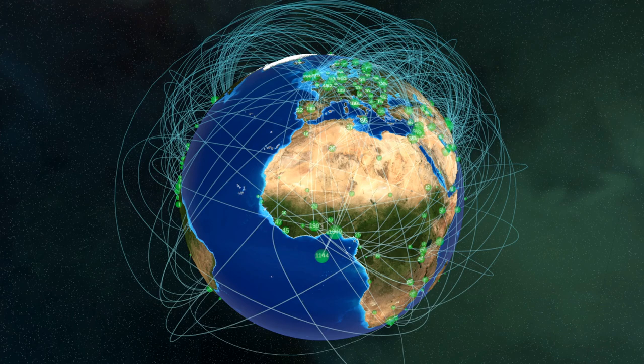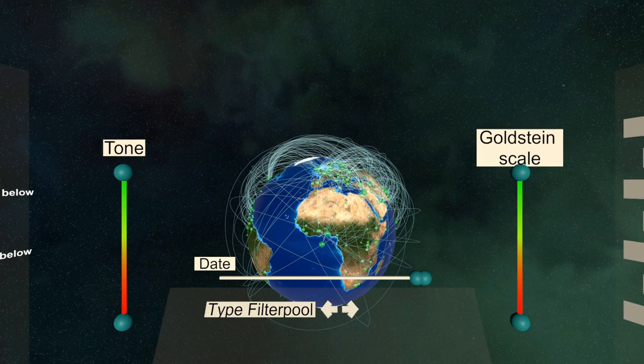Connections between groups indicate that an event occurred that involved actors from both connected countries. In order to navigate around the globe, the controller's trigger buttons are used.